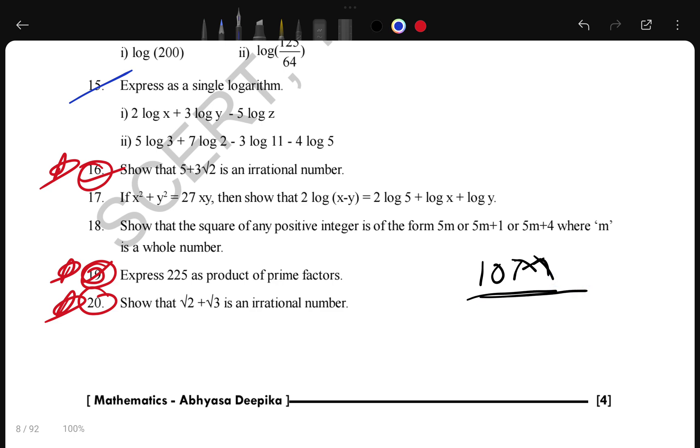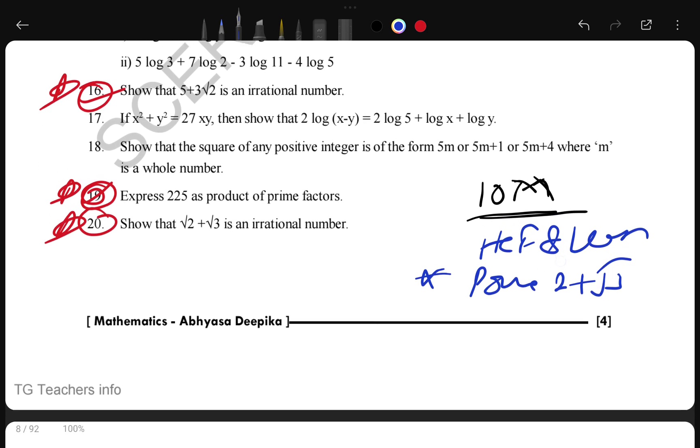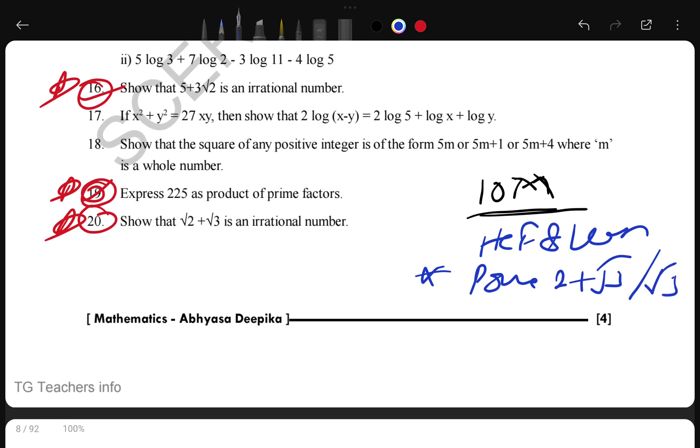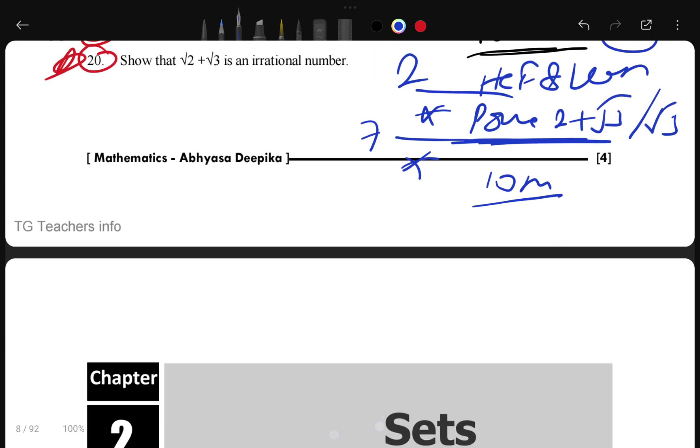I already told you, if you want to get 10 marks, 10 marks is confirmed from this Real Numbers chapter, which is including HCF and LCM and proving irrationality like 2 plus root 3 or root 5. This type of proof or proving that something is irrational, this type of question is very important. This will come in your long question, 7 marks, or 2 marks, and 1 mark question in MCQ. 10 marks confirmed from this chapter, this is my guarantee.